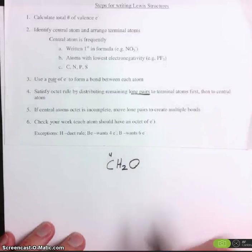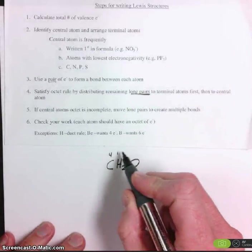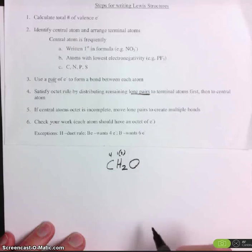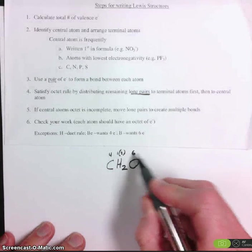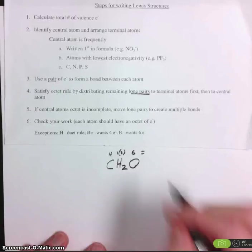Carbon is in group four. It has four valence electrons. Hydrogen has one valence electron, and there's two hydrogens. Oxygen has six valence electrons. That's a total of twelve electrons.